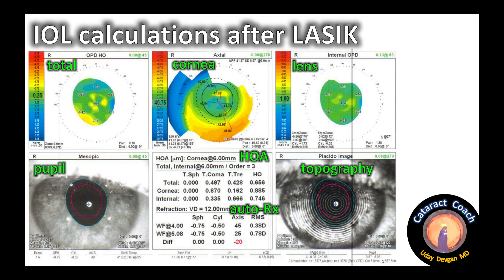The top right box is the lens — that's the internal power of the eye. Looking at that top row, the total power of the eye is the cornea plus the lens, which makes sense. The bottom left corner shows the pupil, with both photopic and mesopic pupil sizes, and also the relative position of the central visual axis to the pupil. The middle box on the bottom row shows the autorefractor, with readings at both a 4mm and a maximum 5mm zone for this eye.